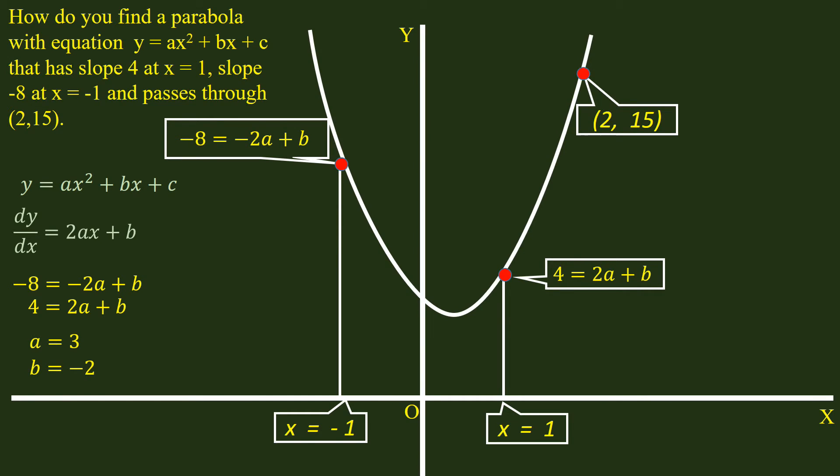We know the parabola is passing through the point (2,15). Plug in these values in y = ax² + bx + c and solve it for c. 15 = 3(2²) - 2(2) + c. C = 7.